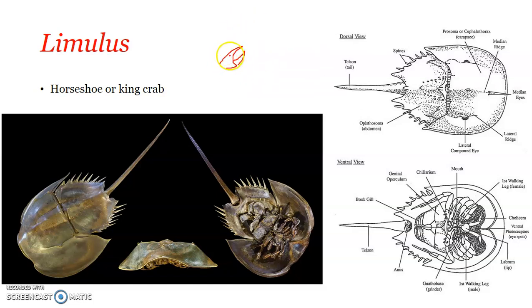The chela is spelled C-H-E-L-A, and the chelate legs are meant for holding on to prey, capturing prey, or pushing prey into the mouth. Such functions are performed by the chelate legs. The last sixth pair is a non-chelate leg where the chela is not well-defined. So: first pair — chelicerae; second to fifth — chelate legs; sixth — non-chelate leg. There are six pairs of appendages associated with the prosoma.